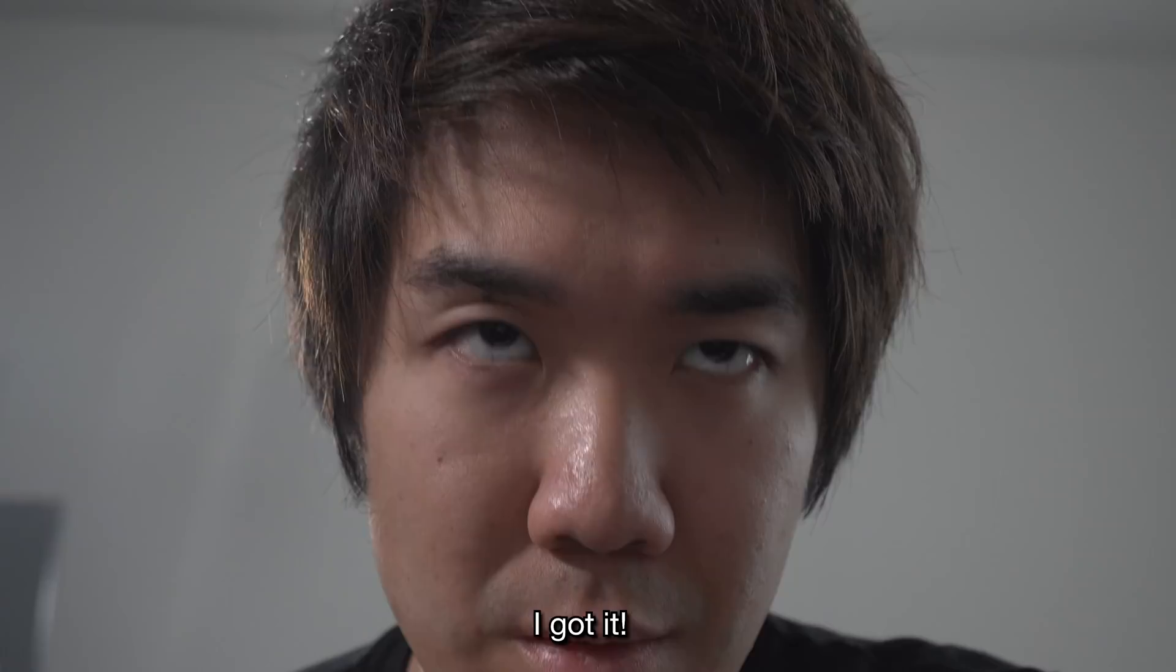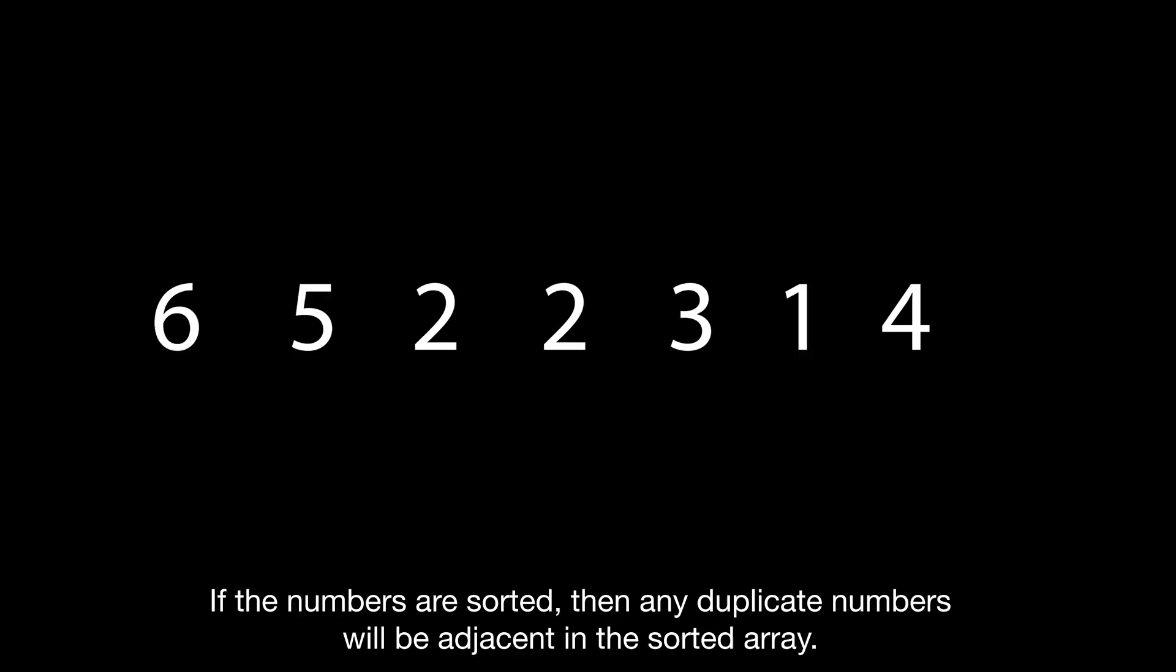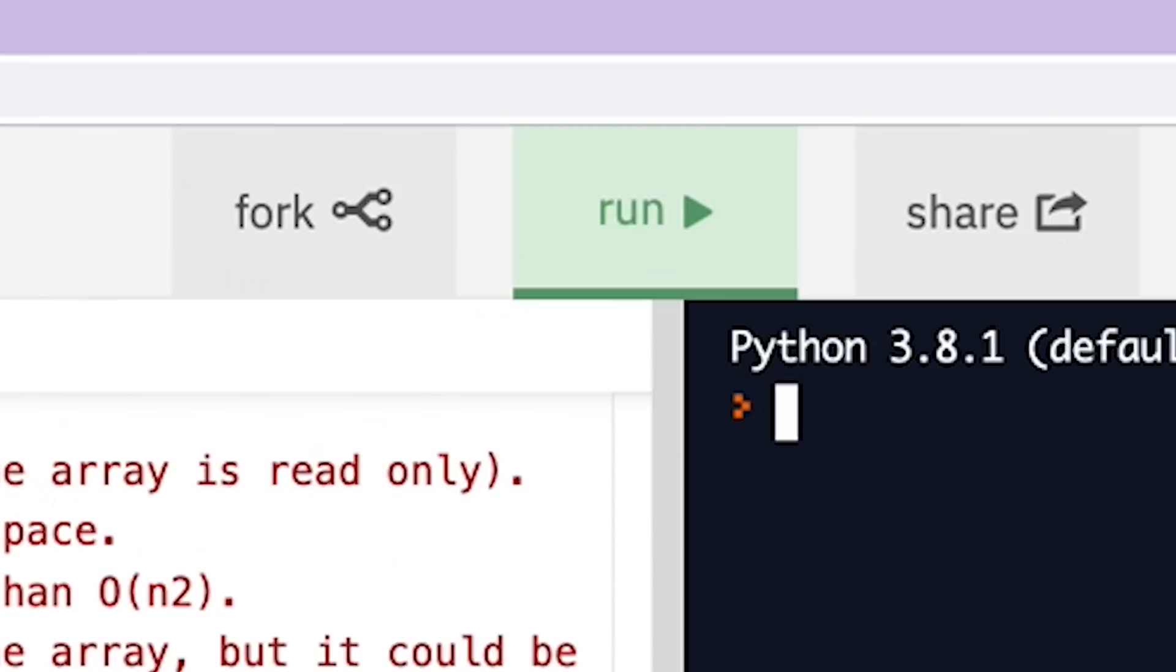Find the duplicate number. I got it. If the numbers are sorted, then any duplicate numbers will be adjacent in the sorted array. A simple sort and a linear scan will do.